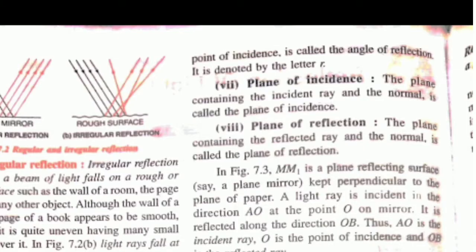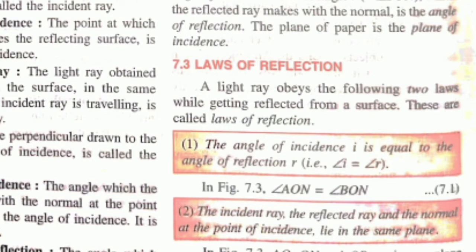Now there are some important terms, because they are important for the 10th class — there are related and critical questions. These terms are important. First is the incident ray: when the ray of light strikes a surface, that is the incident ray. The point of incidence is where the ray reflects. The reflected ray is the ray of light that reflects back. If we pass a line from the point of incidence, that becomes the normal. The angle between the incident ray and the normal is the angle of incidence. The plane of incidence is the plane containing the incident ray and the normal.